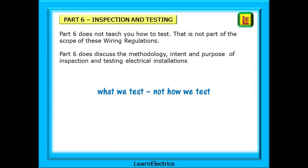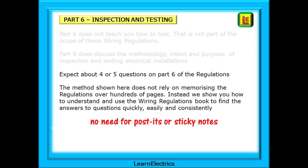Part 6 of the regulations does not teach you how to test. This is not part of the scope of this book and is covered in other books and videos. You will not get questions on actual test procedures in the exam. Part 6 does discuss the methodology, the intent and purpose of inspecting and testing electrical installations. You should expect about 4 or 5 questions on Part 6 of the regs. The method shown here does not rely on memorising regulations over hundreds of pages. Instead we show you how to understand and use the wiring regs book to find the answers to questions quickly, easily and consistently, and using this method you will not need to use post-its or sticky notes.